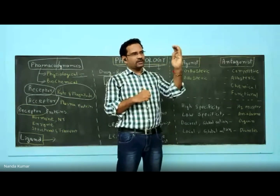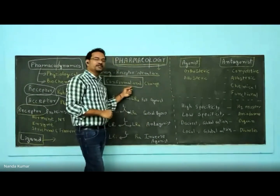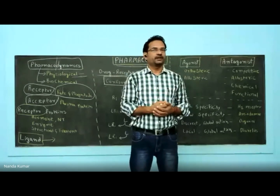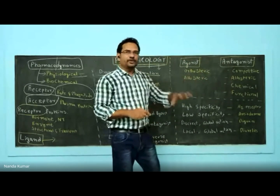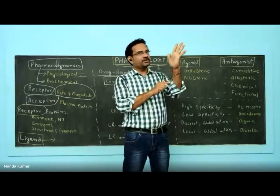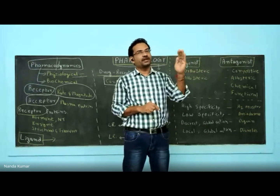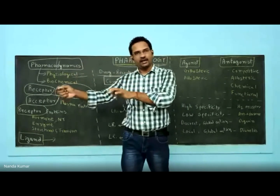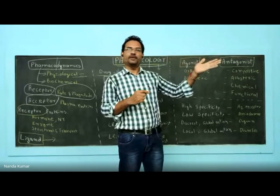What happens if the lock shape is changed? The key cannot go in. This change is nothing but conformational change, and it is very important. That is why insulin, which is a protein, even if synthesized in the lab, cannot be used in the human body — the reason is conformation. A protein must have a particular conformation to act as a drug or effector molecule. That is why insulin is synthesized using bacteria via recombinant gene technology methods, because a living organism provides the correct size and shape that cannot be reproduced in the laboratory.